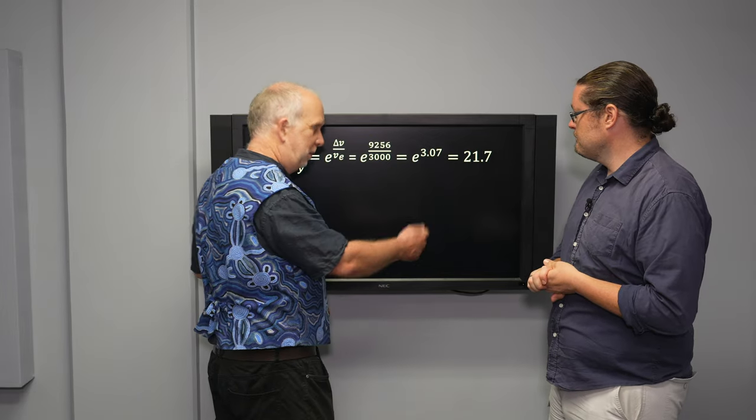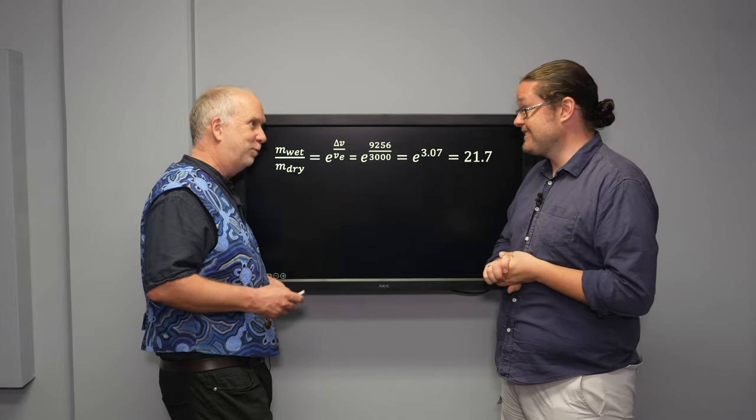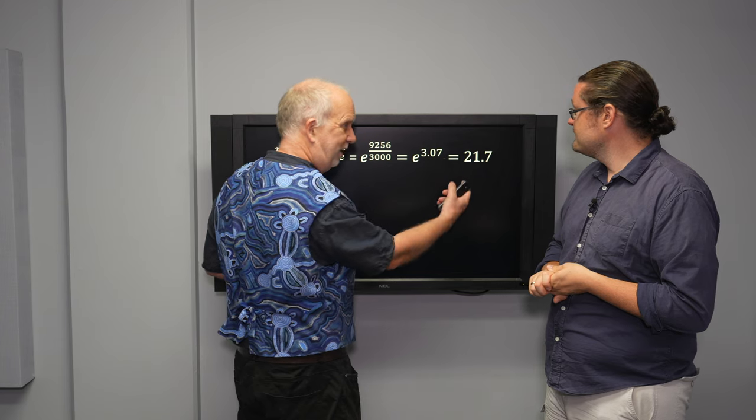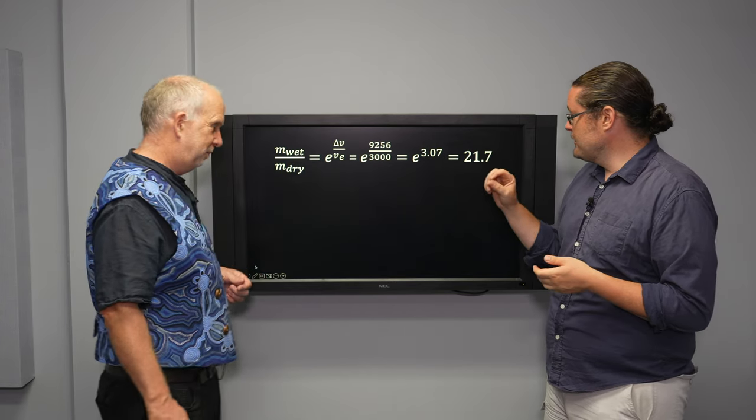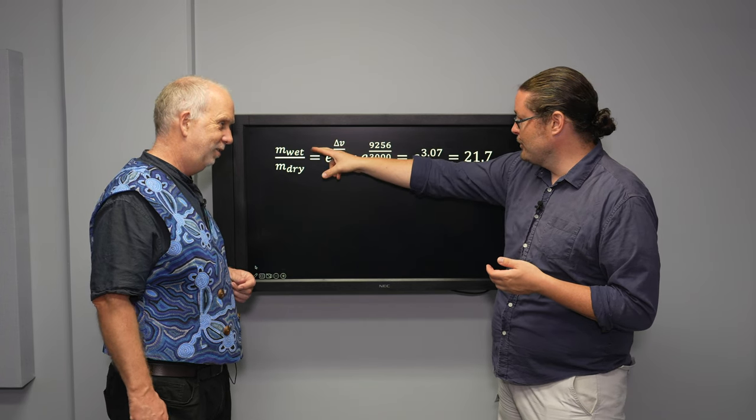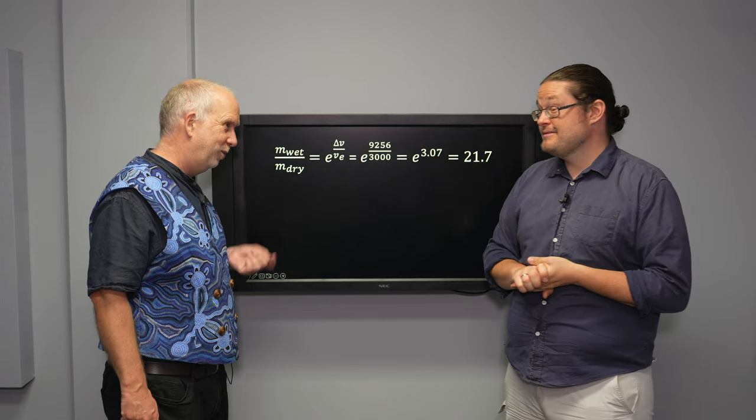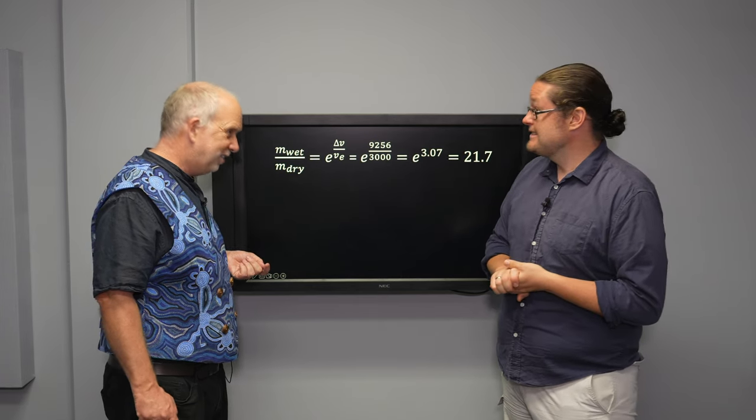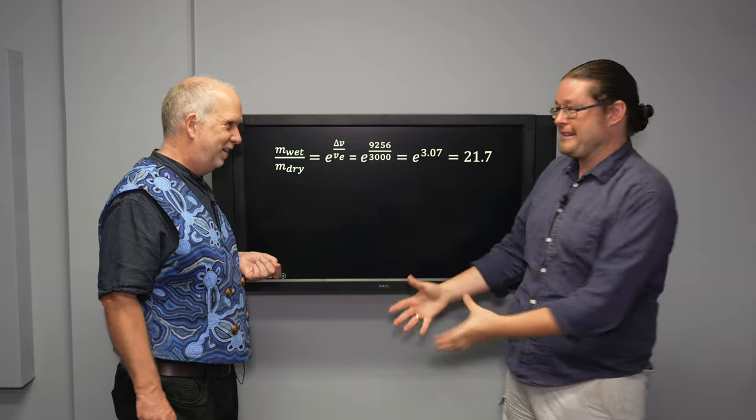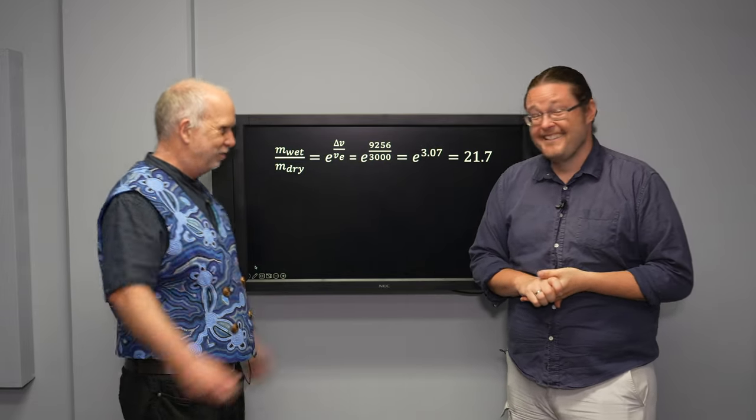3.07 doesn't sound too bad, but then we've got the exponential, and exponential makes things big, which is kind of why you're safe. That means it's actually the exponent of that, which you can do with a calculator, is 21.7. So we essentially need a lot more fuel. We need 20 tons of fuel for every one ton of combined rocket and payload. Seems like a lot. Just imagine what your car would be like. A car weighs about one and a half tons, and if it was 20 tons of fuel on board, you'd need several tankers driving along behind you to keep your car going.